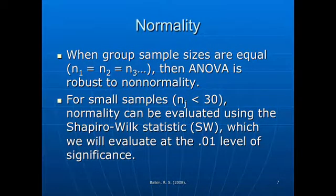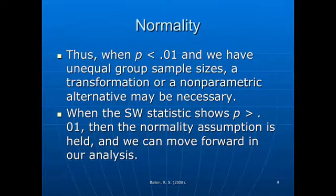When you have small sample sizes, normality should be evaluated using the Shapiro-Wilk statistic, and we evaluate that at the 0.01 level of significance. In other words, if the p-value is greater than 0.01, then there's no statistically significant deviation from a normal distribution — hence, you have a normally distributed group. If p is less than 0.01, then you do have a deviation from normality and the normality assumption is not met. If p is greater than 0.01, you've met the normality assumption and can move forward with your analysis.